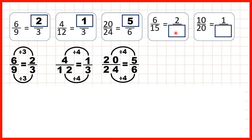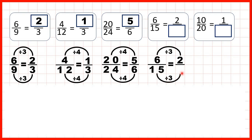Now here, it's the denominator that we need to find, but we follow the same steps. We can see, if we look at the numerators, 6 divided by 3 is 2, because 2 times 3 is 6. And here, what we've done to the numerator, we need to do to the denominator. 15 divided by 3 is 5, because 5 times 3 is 15. So 6 fifteenths is equivalent to 2 fifths.